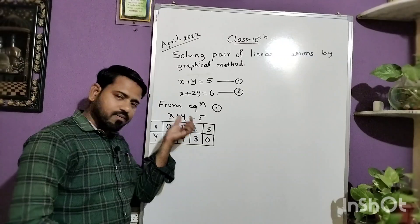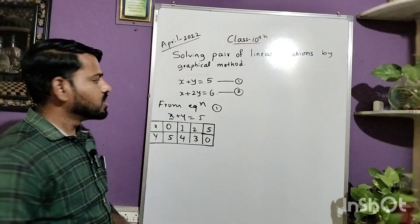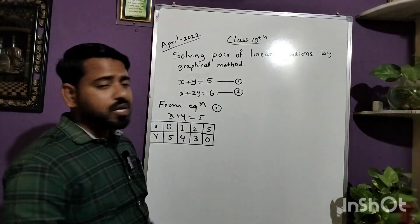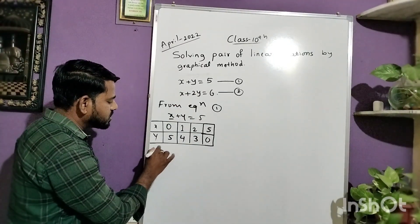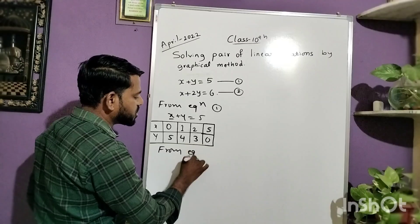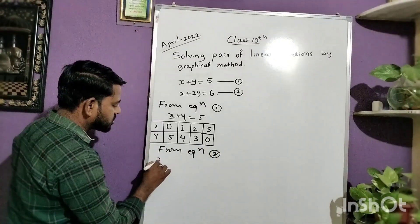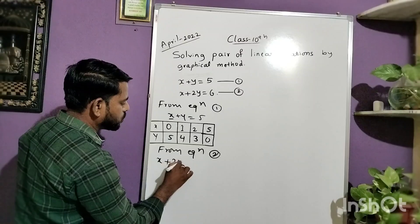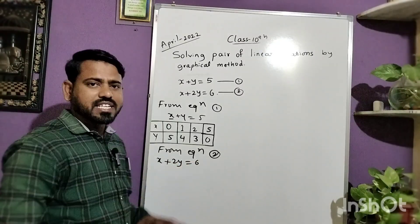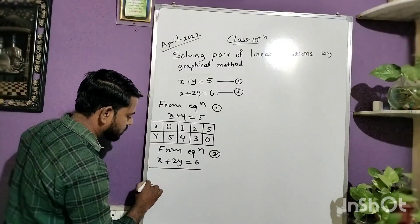For this table you get one mark. Similarly you calculate the values for the second equation, but this second equation is a little different from the first. For such equations it is not necessary to take many values — take only selected values that are easy for you to calculate.